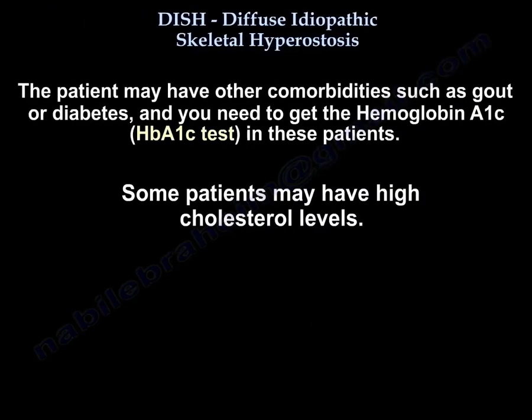Patients may have other comorbidities such as gout and diabetes — you need to get the hemoglobin A1C in these patients. Some patients may also have high cholesterol levels.